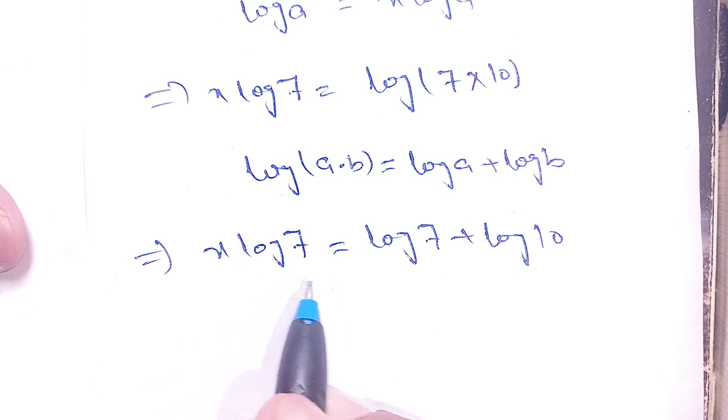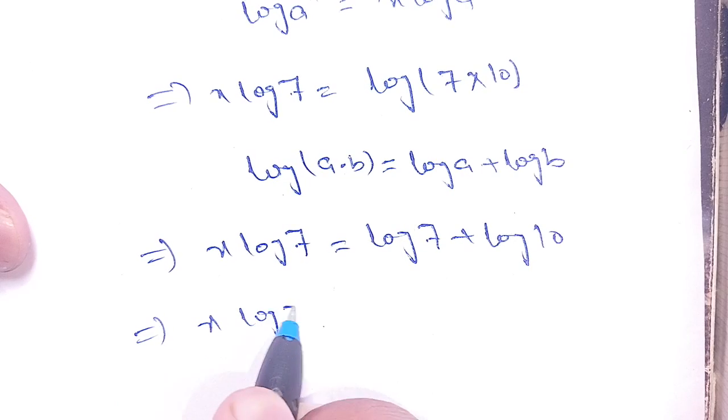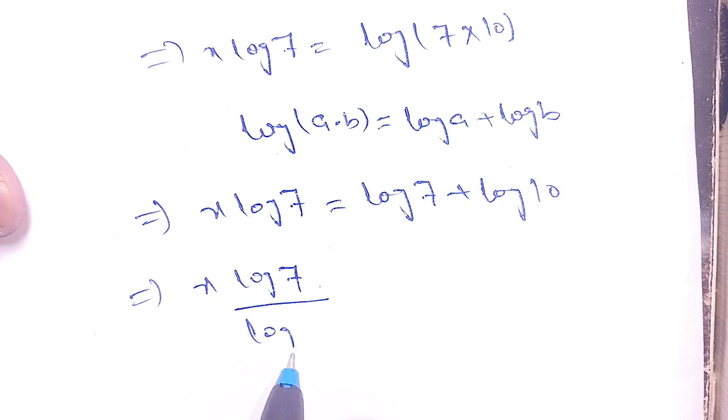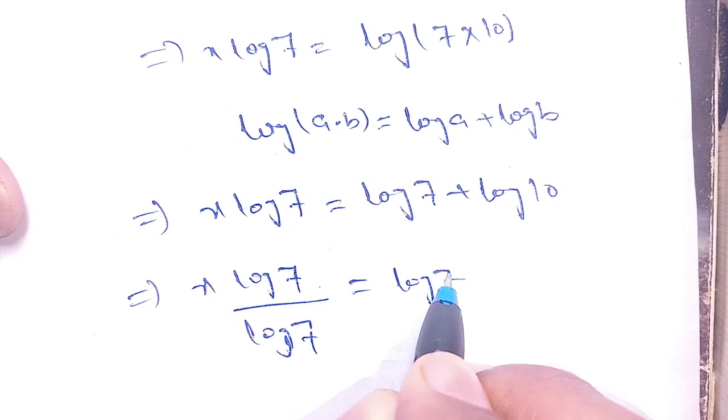on dividing both sides by log(7), we get x·log(7) divided by log(7) is equal to log(7) divided by log(7) plus log(10) divided by log(7).